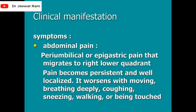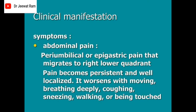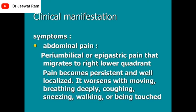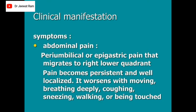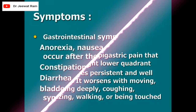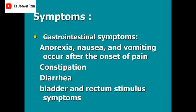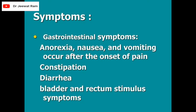Clinical manifestations — symptoms. Abdominal pain: peri-umbilical or epigastric pain that migrates to the right lower quadrant. Pain becomes persistent and well localized; it worsens with moving, breathing deeply, coughing, sneezing, walking, or being touched. Gastrointestinal symptoms include anorexia, nausea, and vomiting, occurring after the onset of pain. Constipation or diarrhea may also occur.